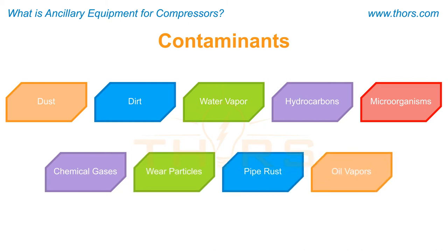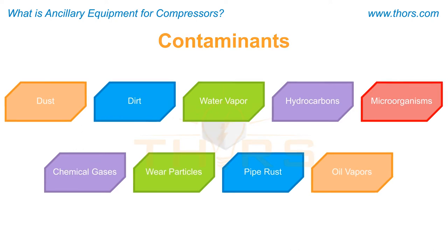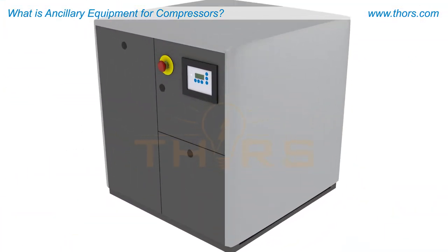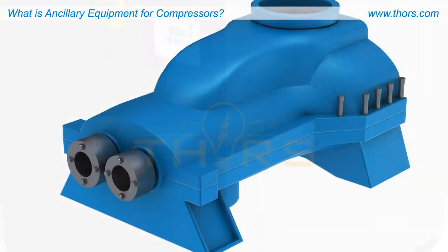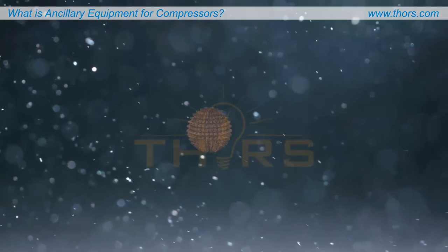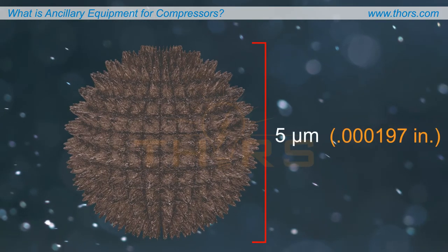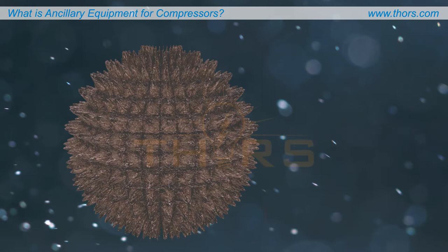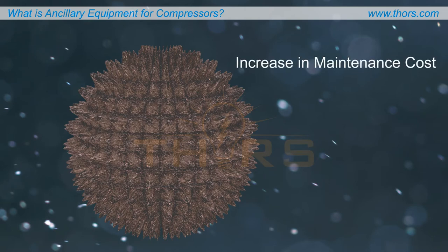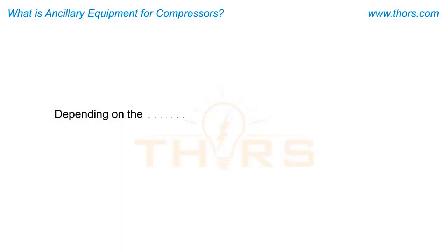Although some care has been taken within the compressor, many pollutants smaller than 5 microns — or 1/10,000,000th of an inch — can pass through the compressor and appear in the compressed air. If left untreated, these pollutants may interfere with the smooth working of pneumatic equipment, leading to increased maintenance costs as well as loss of production.